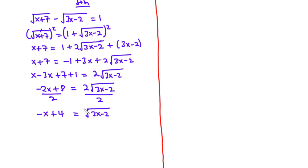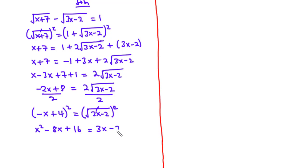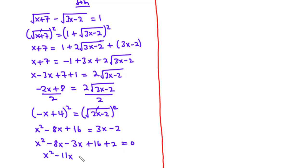Because we still have a square root, let's square both sides again. Squaring the left side: negative x squared is x squared, negative x times 4 gives negative 4x, and we have two of those so negative 8x, plus 4 squared is 16. The square cancels the square root on the right, giving 3x minus 2. Transposing everything to the left-hand side: x squared minus 8x minus 3x plus 16 plus 2 equals 0, which becomes x squared minus 11x plus 18 equals 0.